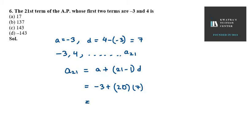So 20 into 7 is 140. And we have minus 3 ahead of it. So you get 137 as A21. So that means B is the right option here.